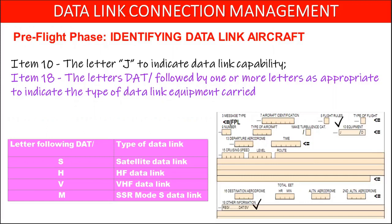The operator shall also insert in item 18 of the flight plan the letters DAT, followed by one or more letters as appropriate to indicate the type of data link equipment carried when J is entered in item 10: S for satellite, H for HF, V for VHF, and M for mode S data link.